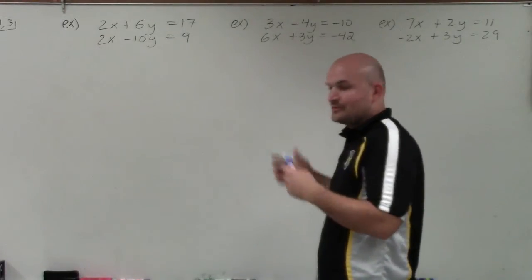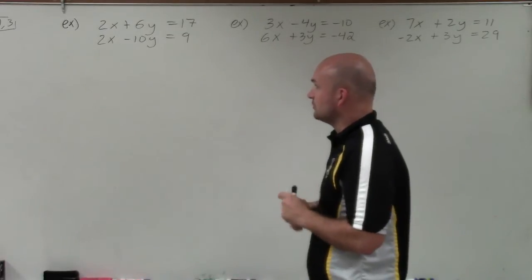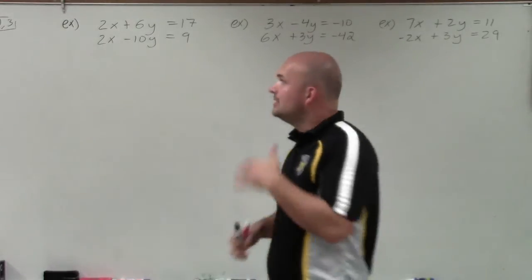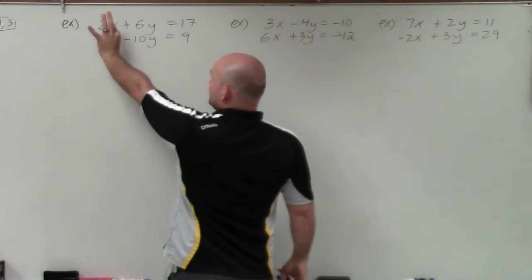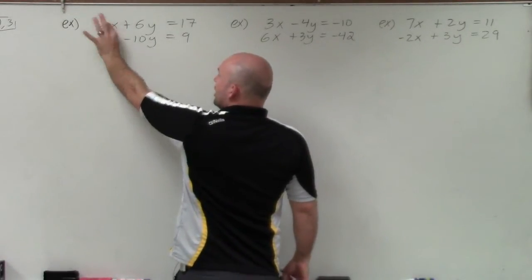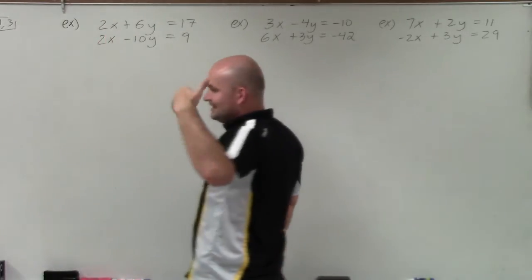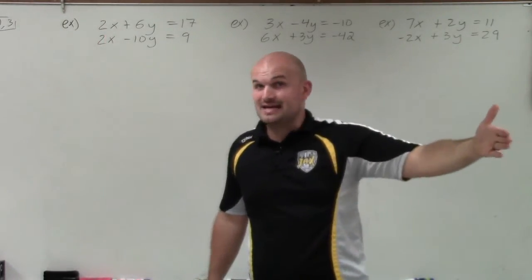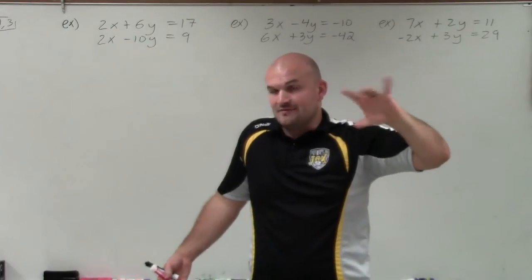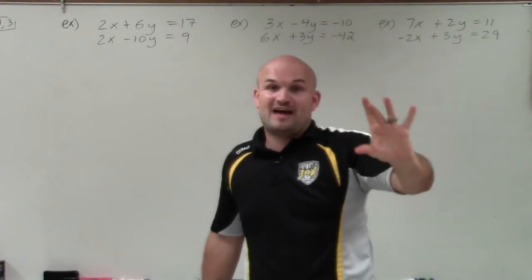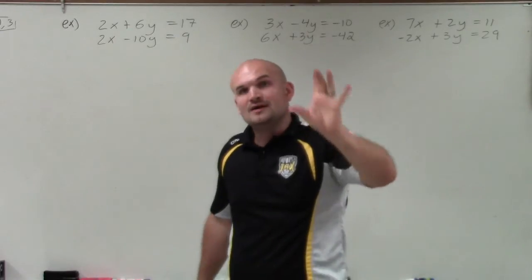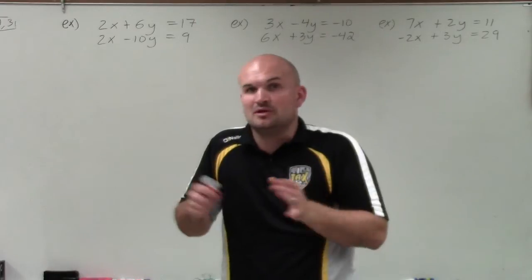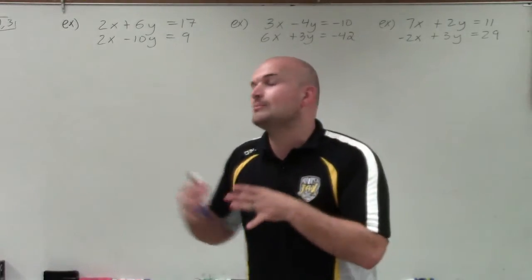So how are we going to do this? The first thing we want to look for is the easiest variable to eliminate, because we like things easy. The best thing about this problem is you can see that my coefficients are exactly the same. Typically, the easiest variables to eliminate are those whose coefficients are exactly the same — same absolute value — or they have an LCM, meaning their common multiple is very easy to obtain. We'll talk more about that later.